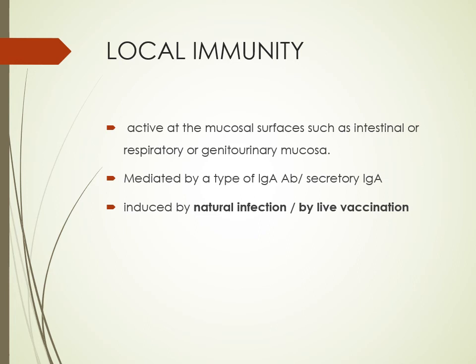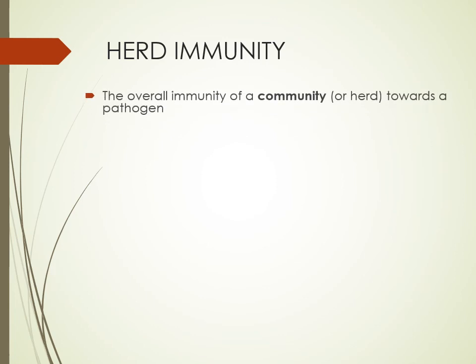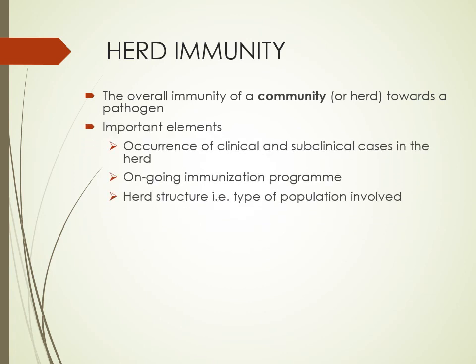There are also different specialized types of immunity. Local immunity refers to immunity at the level of mucosal surfaces — such as intestinal, respiratory, or genitourinary mucosa. The only antibody playing a role in local immunity is secretory IgA. This immunity arises from natural infection or live vaccination, such as OPV (oral polio vaccine), and is never produced by killed vaccines. Herd immunity refers to the overall immunity of a community towards a pathogen — it has played a very important role in eradicating polio infection.